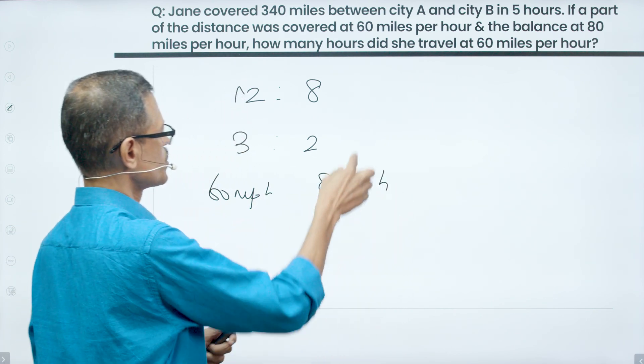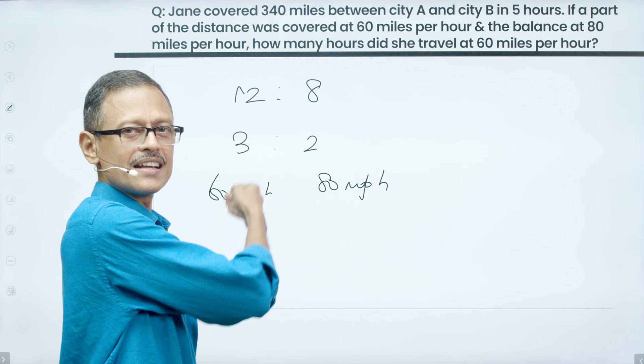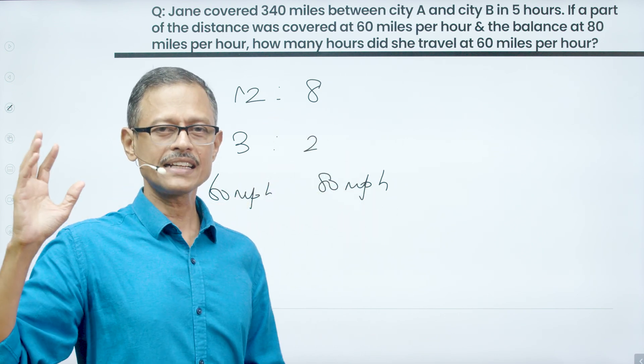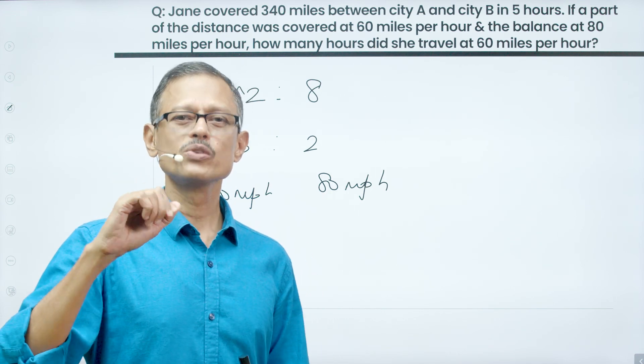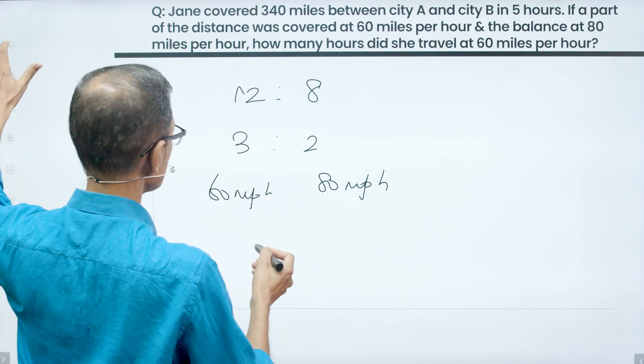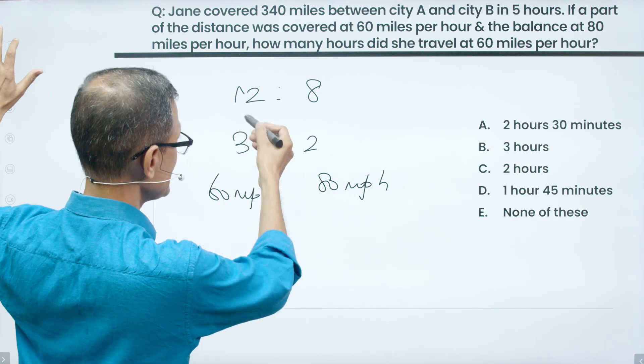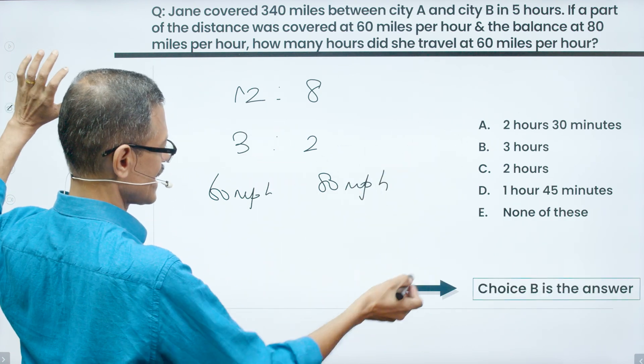This question is rather easy because the total time taken is 5 hours. So 3 hours at 60 miles per hour and 2 hours at 80 miles per hour. That's all it should take. The second method appealed to you. Try the bonus question using the second method. So 60 mile per hour is the answer. Sorry, 3 hours is the answer. Choice B is the answer to this question.